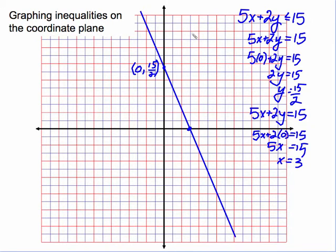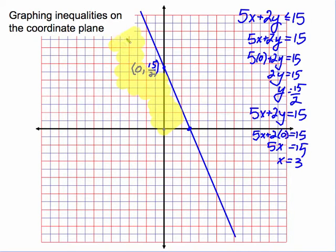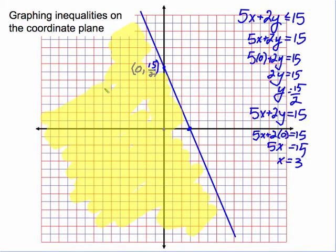Now we need to test a point. We'll test (0, 0) again. If x is 0 and y is 0, we have 0 is less than or equal to 15. That's true, so this point is in the solution area, meaning the solution lies on this side of the line. We shade this whole area, and that is our solution.